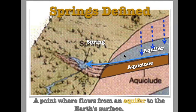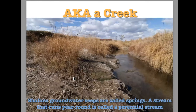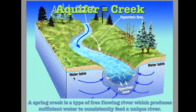Springs are defined as a point where water flows from an aquifer to the earth's surface. If we have an aquifer and then what we call an aquiclude where the water can't get through, water can erupt out of the ground and form a spring that will eventually turn into a creek. It could be a wetland or something that just seems abnormally wet even when there isn't any rain. Shallow groundwater seeps are called springs. A stream that runs year round is called a perennial stream — one way to see where springs are is just look for creeks that are always wet. The aquifer really is a creek that's always running, with water flowing into the creek from the water table.